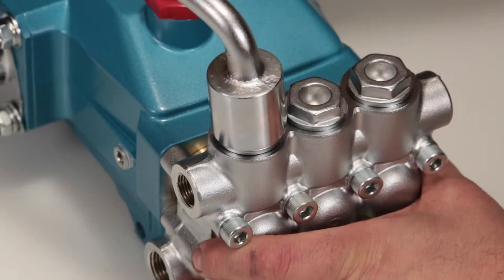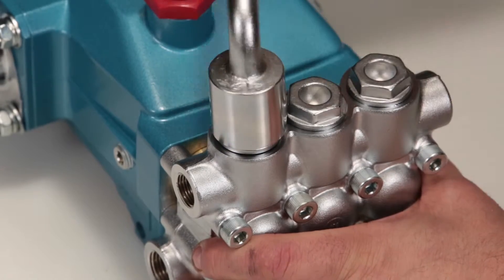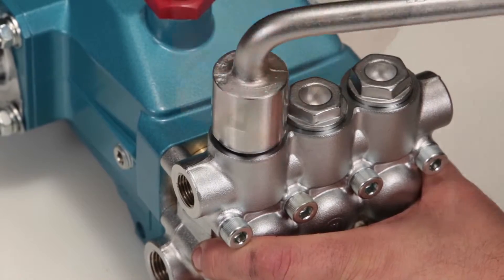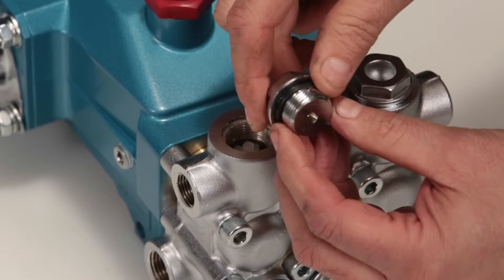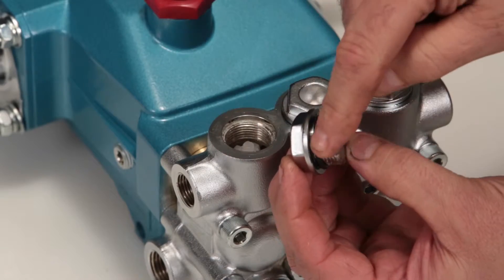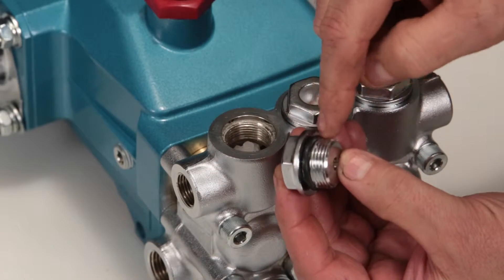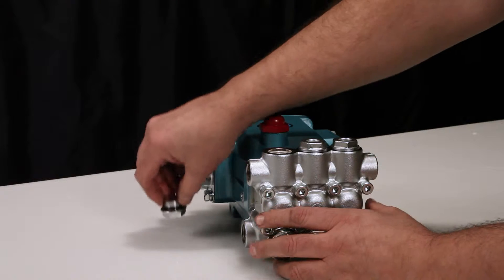To begin servicing the valves, remove the valve plugs using a 24mm hex wrench. After removing the valve plugs, inspect the O-rings for cuts, nicks, or any damage. A new O-ring is included with the valve kit.